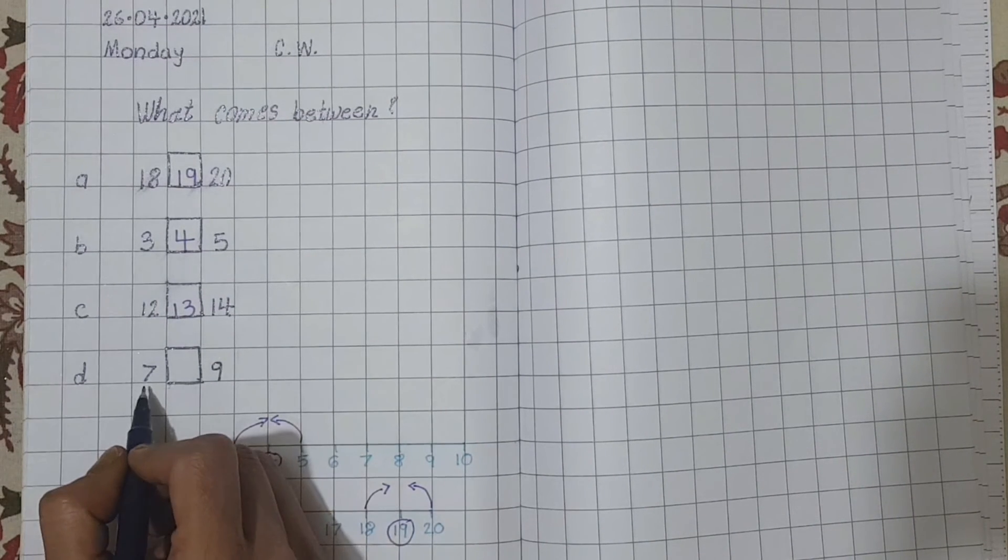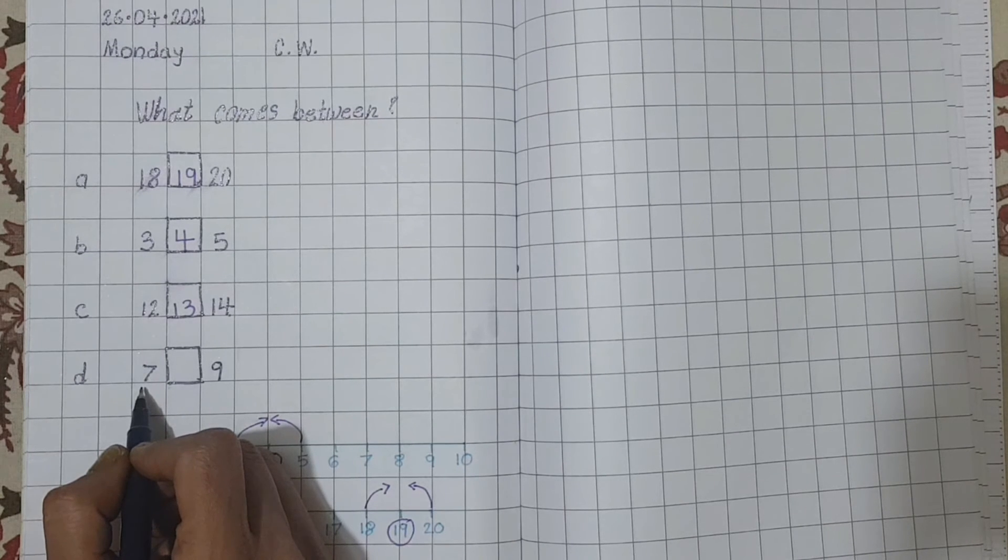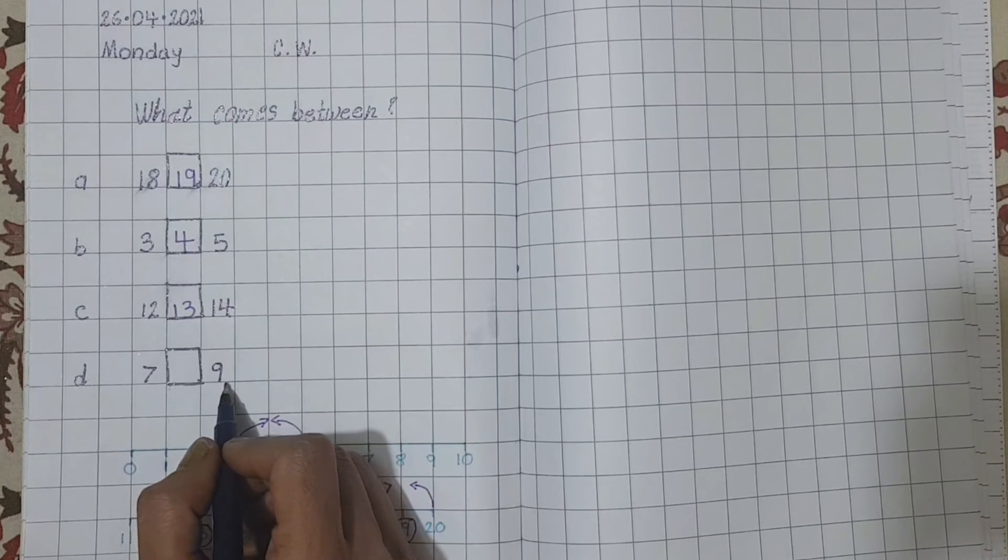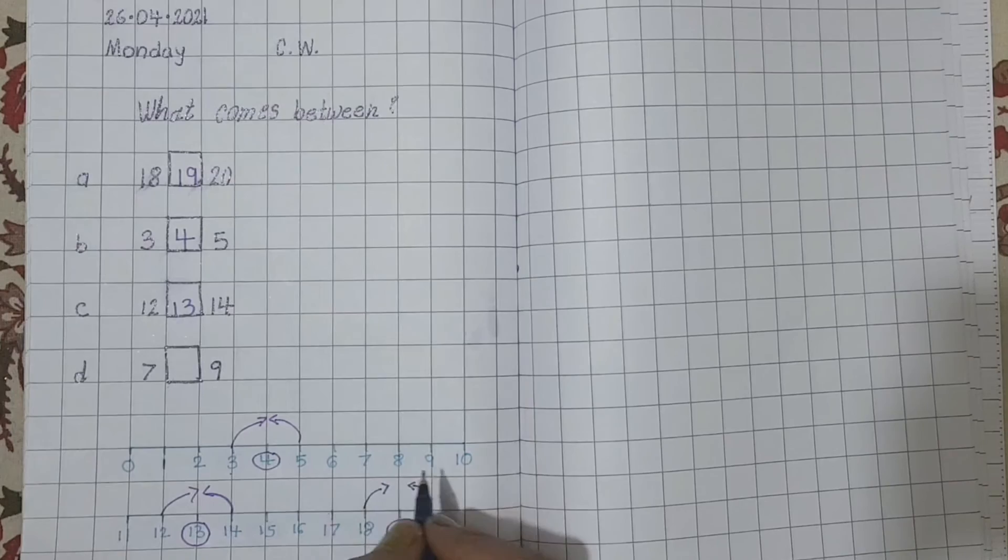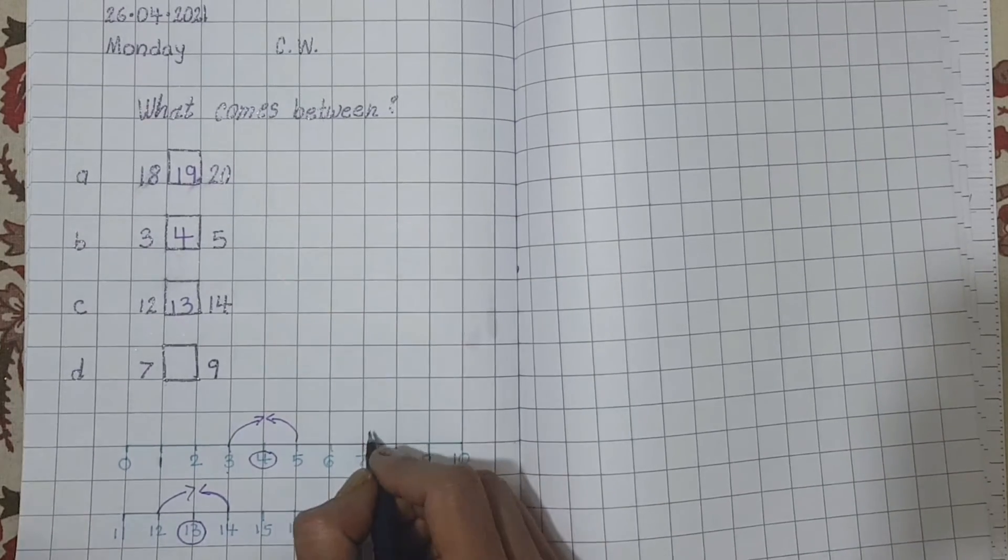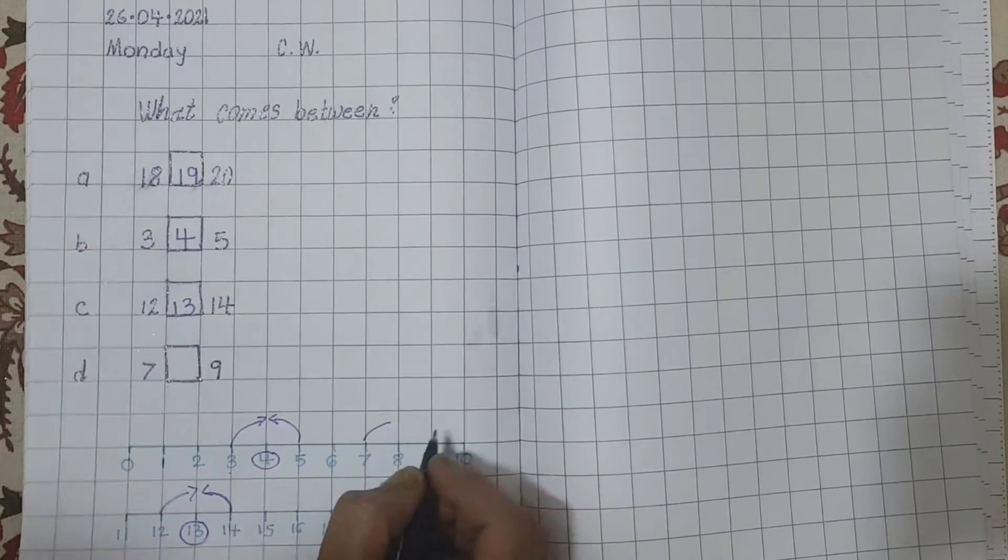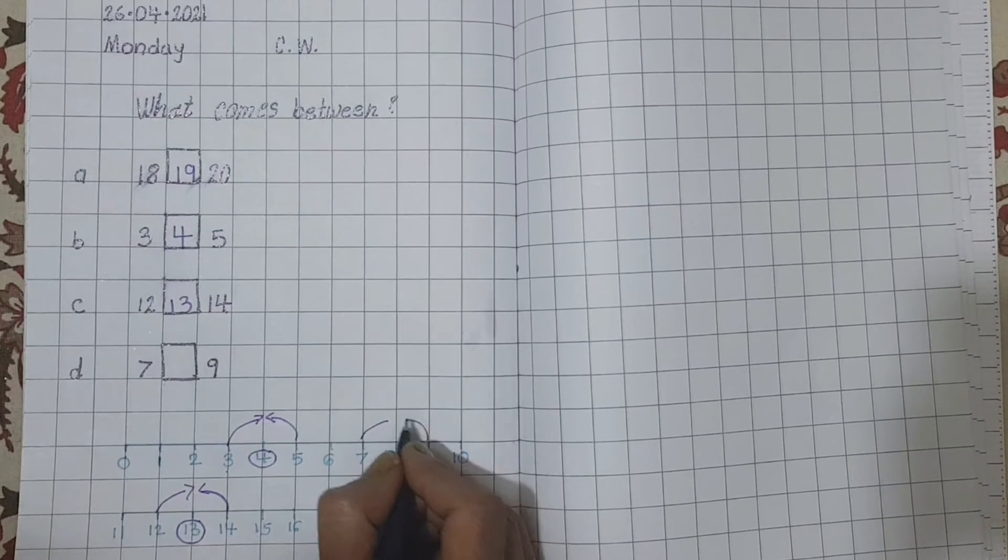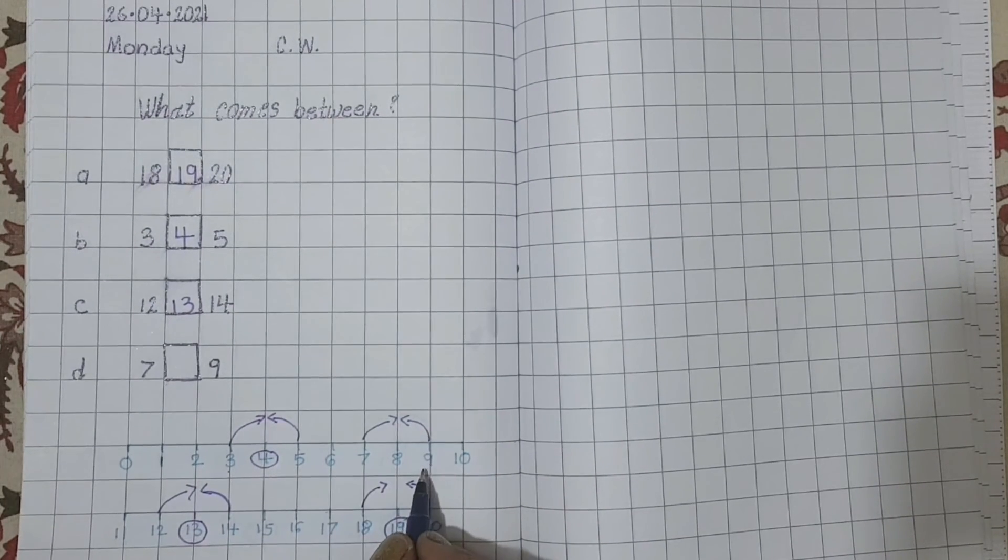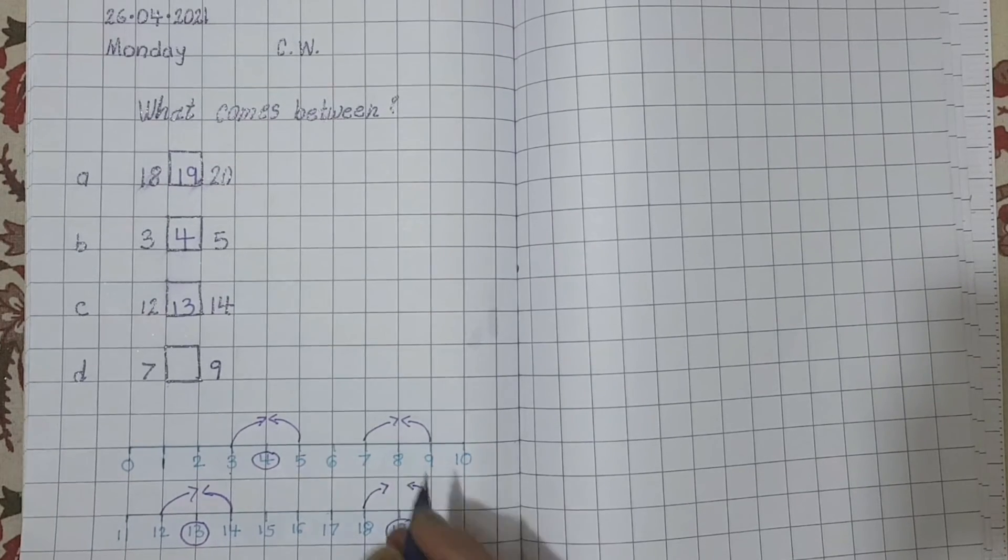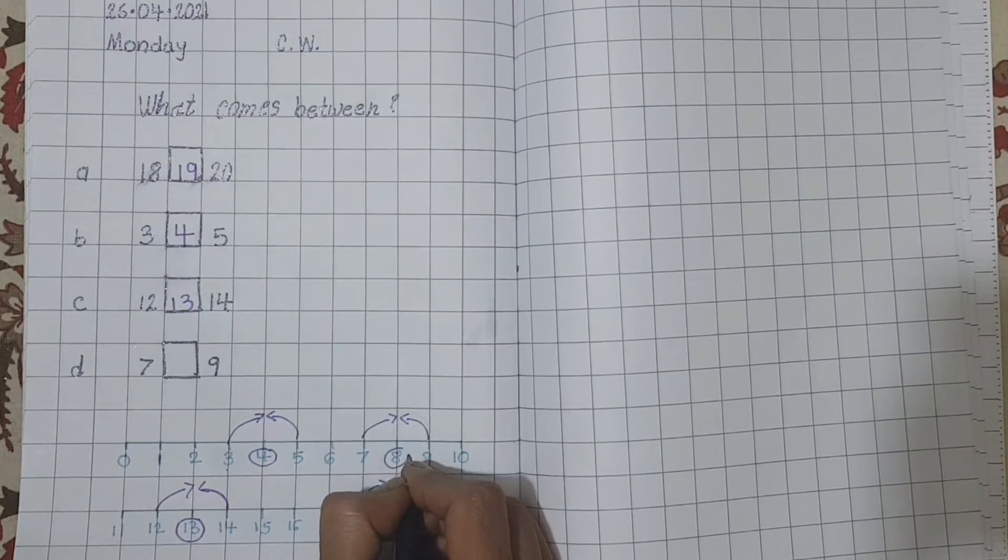So, next one. Which number is this? Come on. Tell me. 7. Right. And this one? 9. Where is number 7? Here. And number 9 is here. So, can you tell me what comes between 7 and 9? Right. Number 8.